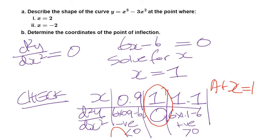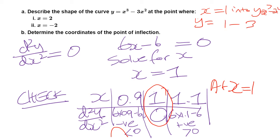But have I actually answered the question fully? The question asks for the coordinates of the point of inflection — I've only found the x-coordinate. I still need the y-coordinate, which I find by substituting into the original equation: y = (1)³ − 3(1)² = 1 − 3 = −2. So my point of inflection is at coordinates (1, −2).